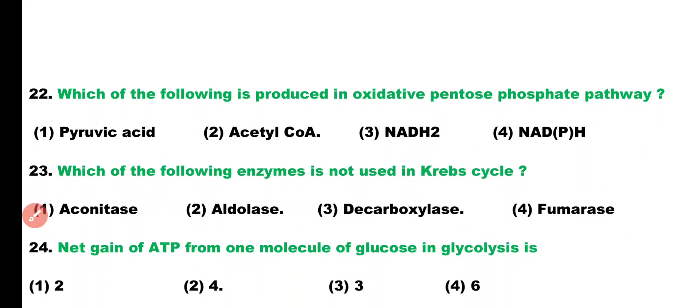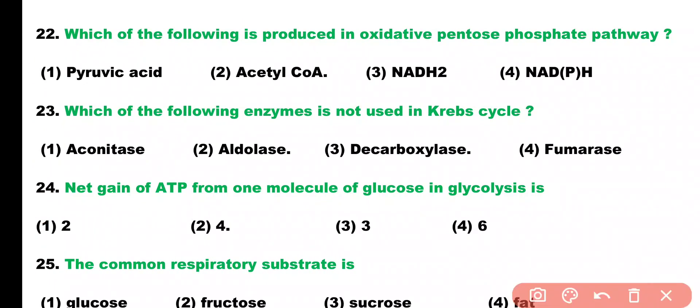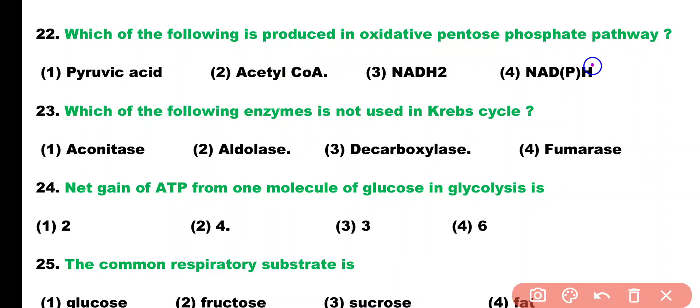Question number 22. Which of the following is produced in the oxidative pentose phosphate pathway? Pyruvate acid, acetyl coenzyme A, NADH, or NADPH. Correct answer is option 4. NADPH is produced in the oxidative pentose phosphate pathway.